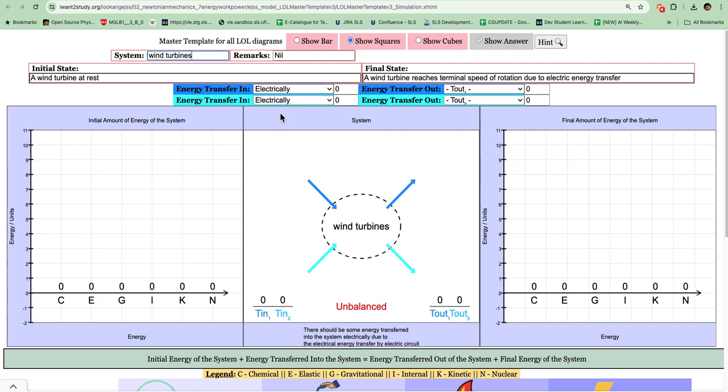It will dynamically change over here in the diagram. The initial state is something we want the student to realize is the beginning of the energy consideration. Perhaps it is a wind turbine at rest, so it will have no energies on the first LOL. Then maybe the final state is a wind turbine reaching a terminal speed of rotation due to electrical energy transfer.